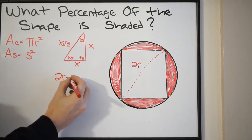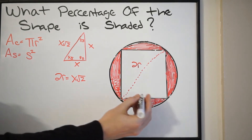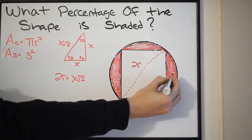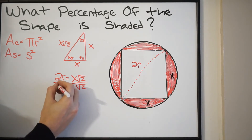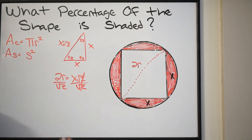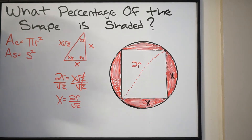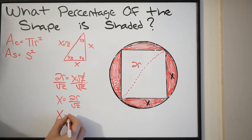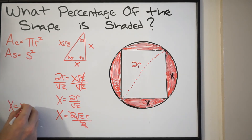So 2r is equal to x√2. I want to solve for x, because the sides of the square are each x. Dividing both sides by √2, we get x equals 2r over √2. Rationalizing the denominator gives us 2√2·r all over 2. The 2s cancel, so x equals √2·r.